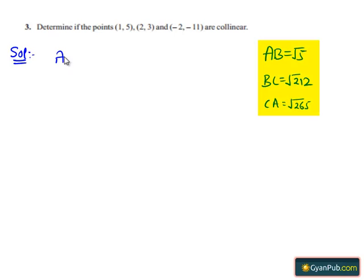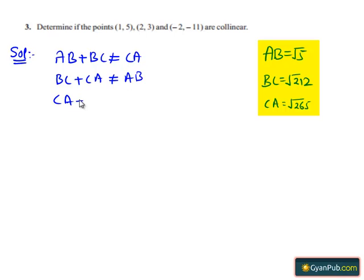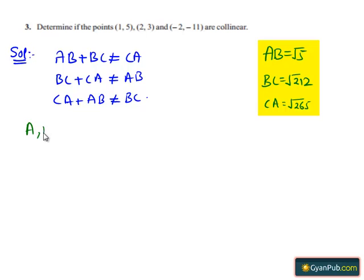Here, we see that AB + BC is not equal to CA. Similarly, BC + CA is not equal to AB, and CA + AB is not equal to BC. Hence, we can say that the points A, B and C are not collinear.